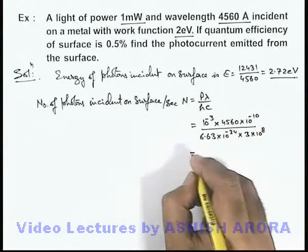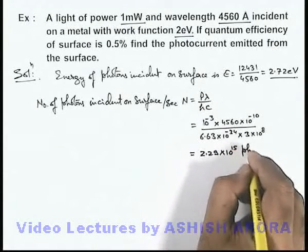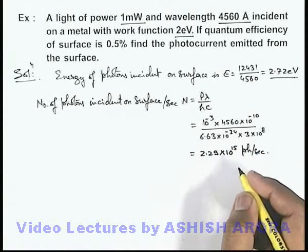So on calculation this will give us 2.29 into 10 to power 15 photons per second are incident on to the surface.